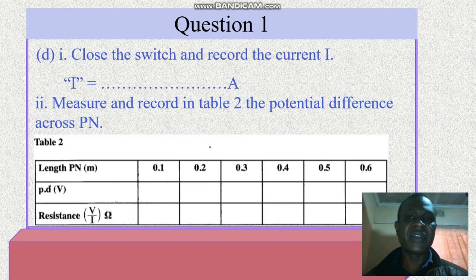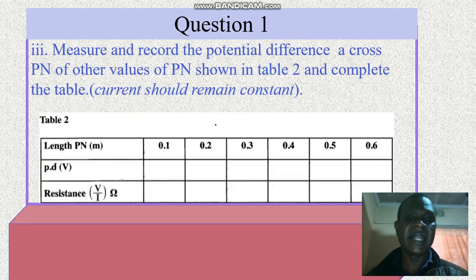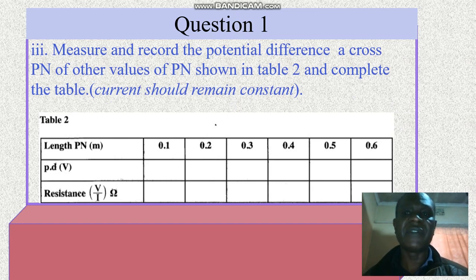Close the switch and record the current I. Measure and record in table 2 below the potential difference across PN. Measure and record the potential difference across PN for other values of PN shown in table 2 and complete the table.